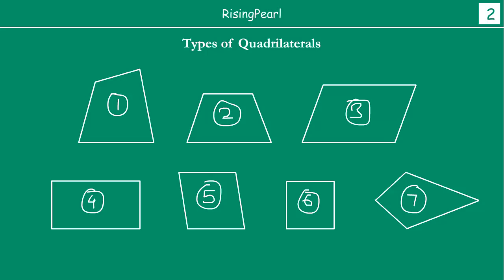But clearly aap dekhe hi, aapko malum chal raha hai ki these shapes look so different. So hum abhi kya kare — we are going to take a look at each one of them and go in detail. Pahli cheez dosta, jab kabhi hum ek generic quadrilateral draw karte hain, you draw a straight line as the base and then the other three sides in such a way that none of them are parallel and they are not equal in length.